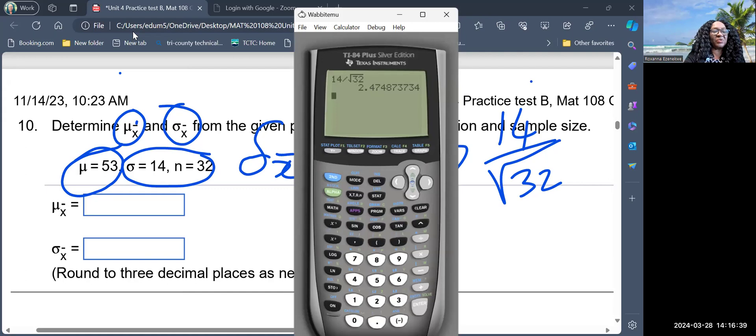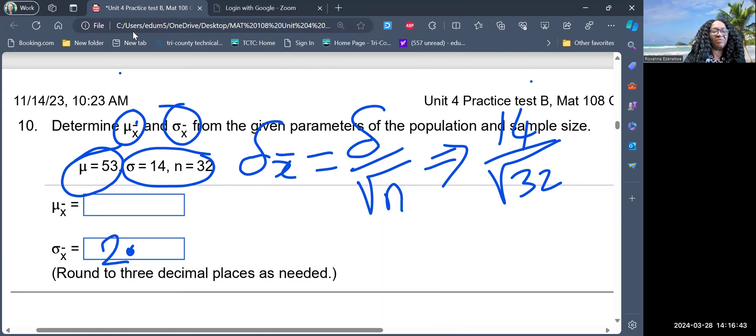2.475 is correct. So the standard error is 2.475. And then the mean of the central limit theorem is 53, the same as the mean of the original data. So we have answered that question.